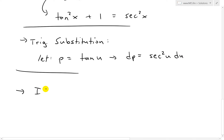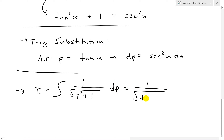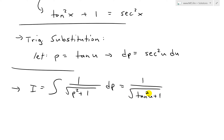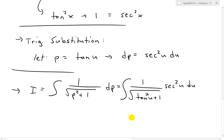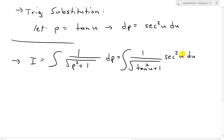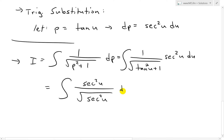So I equals the integral of 1 over square root of p squared plus 1, dp. The p is tan u, so we have square root of tan u squared plus 1, and we replace dp with secant squared u du. Now, by our identity, tan squared u plus 1 is just secant squared. So this becomes the integral of secant squared u divided by square root of secant squared u, du — and the square cancels with the square root — giving secant squared u over secant u, du.